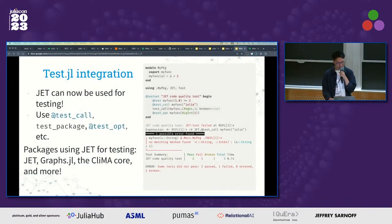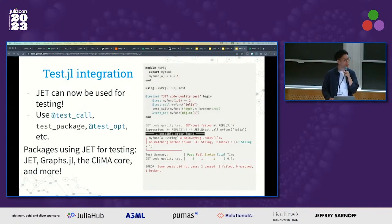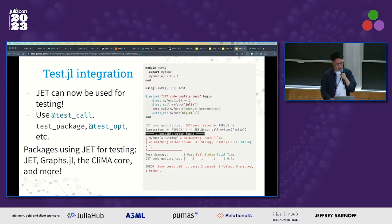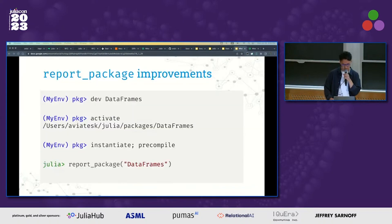Moving forward, there have been numerous updates apart from JET's performance. First, integration with Test.jl was implemented, making it handy to use JET during testing. A fair number of packages already use this feature and incorporate JET into their test suites. Notable early adopters include JET itself and the ClimaCore package, and I think the number is increasing.